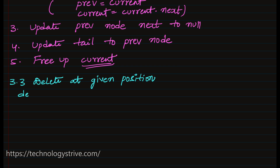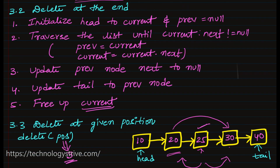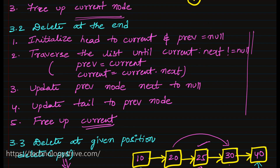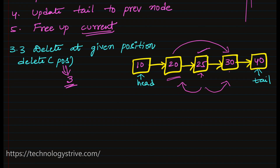The third delete case is deleting at a given position. For example, delete the node at position 3, which is node 25. To delete a node at any position, we always need the previous node and the next node. We update the previous node's next to point to 25's next node, effectively skipping 25. To get the previous node, we perform traversal similar to the add-at-position algorithm.